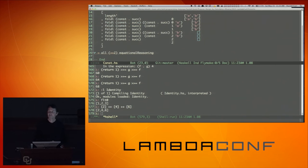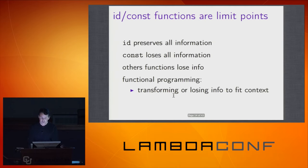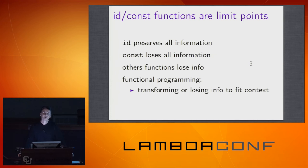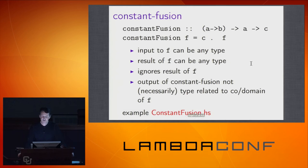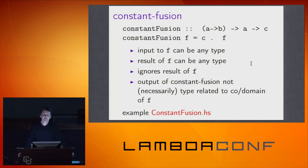You can look at id and const as limit points. Id doesn't lose any information; const loses all information. All other functions lose a little bit of information. Functional programming can be viewed as the art of transformation — transforming or losing information to fit a certain context. The rest of this talk is to get you used to thinking mathematically about your functions.